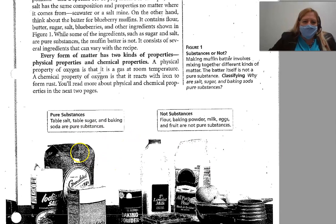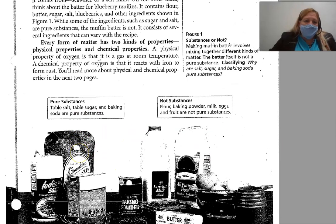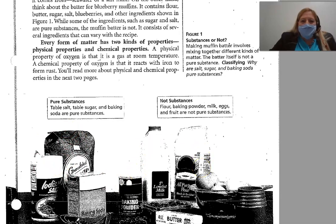Here are our pure substances: table salt, table sugar, and baking soda — those are all pure substances. Not pure substances: flour, baking powder, milk, eggs, and food are not pure substances.